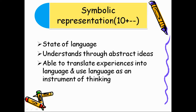The symbolic stage is also called the stage of language and is the most advanced form of representation. Here the child understands through abstract ideas. He is able to translate experiences into language and uses language as an instrument of thinking. As an example, the child explains his visit to a tourist spot. These are symbols and abstract ideas seen in the symbolic stage.